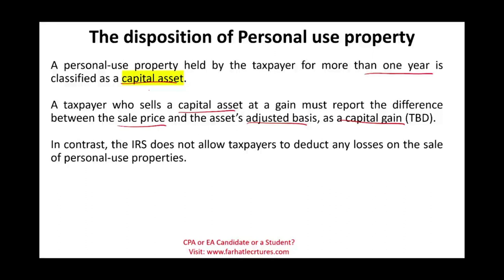In contrast, IRS rules do not allow you to deduct losses on the sale of personal use property. If you think about it, personal assets — furniture, your refrigerator, personal car, desk, computer — when you sell used personal items, you're almost always going to incur a loss. If the IRS allowed those losses, people would buy things, use them, sell them, and claim tax deductions. That's not feasible or reasonable, and that's why these losses are disallowed.